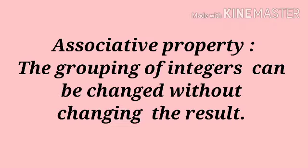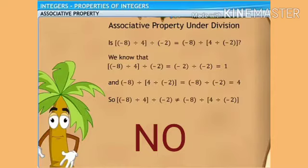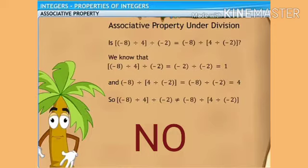The next property is associative property — the grouping of integers can be changed without changing the result. Testing: is (minus 8 divided by 4) divided by minus 2 equal to minus 8 divided by (4 divided by minus 2)? Using division of integer rules, the left side gives 1 and the right side gives 4, which are not equal. Hence, division of integers is not associative.